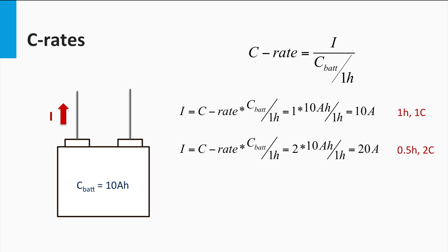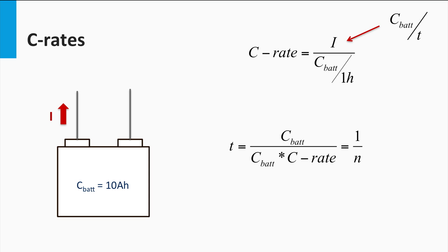On the other hand, a C-rate of 2C for the same battery would correspond to a discharge current of 20 Ah over half an hour. Similarly, a C-rate of 0.5 implies a discharge current of 5 Ah over 2 hours. In general, it can be said that a C-rate of nC corresponds to the battery getting fully discharged in 1 over n of an hour, irrespective of the battery capacity.